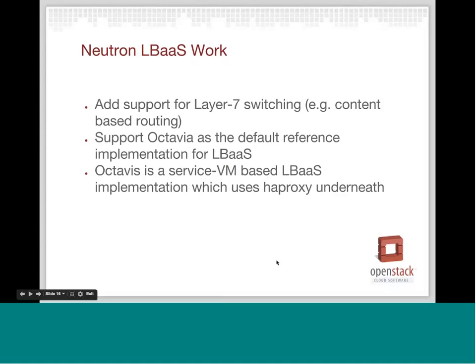Load balancer work — the load balancer team has really picked up steam and they're doing a lot of interesting work during the Liberty cycle. They're going to add support for layer seven switching, which is typically known as content-based routing. They're also going to move to Octavia as the default reference implementation for LBaaS. Octavia is a service VM-based LBaaS that uses HAProxy underneath. They're making a lot of great progress, and I suspect that at some point either in Liberty or the M-cycle they'll end up with a separate load balancer API endpoint as well.